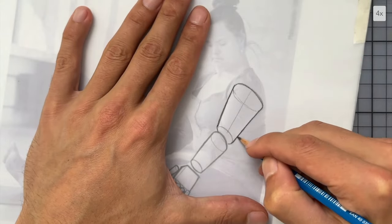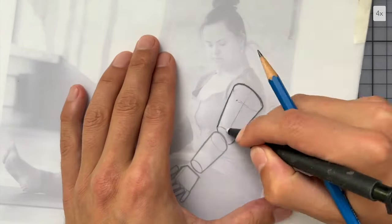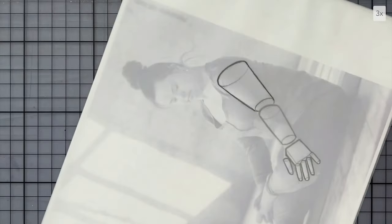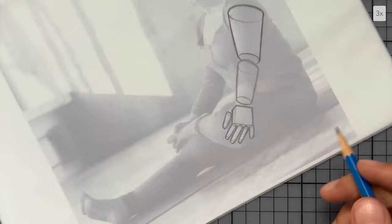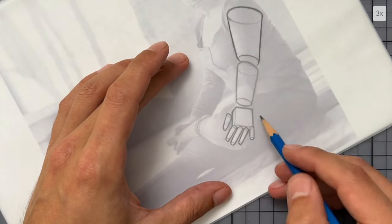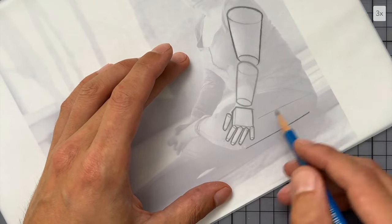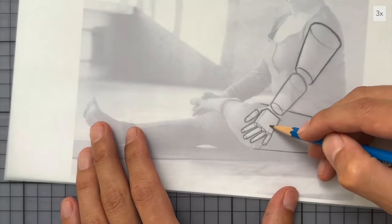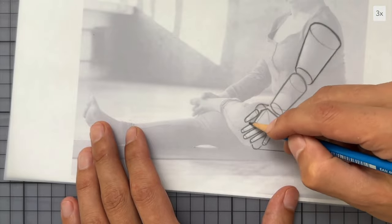Here you can see me thickening up the contour line and erasing the center line of the cylinder. Let's do the thigh next. That hand is partly covering the thigh. So right now I'm really happy that I have the tracing paper and I can just draw my cylinder without having to worry about drawing around the hand.